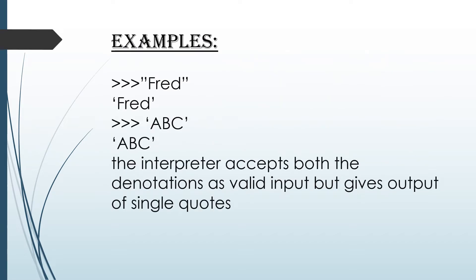Now, a basic example of strings: I gave FRED in double quotations and got an output of FRED in single quotations. I also gave ABC in single quotes and got output of single quote ABC. So the interpreter accepts both double quotes and single quotes as input, but gives output in single quotes.